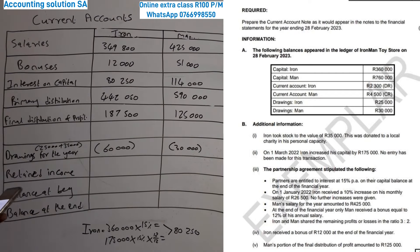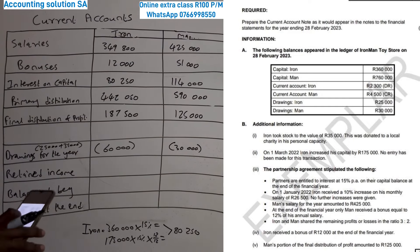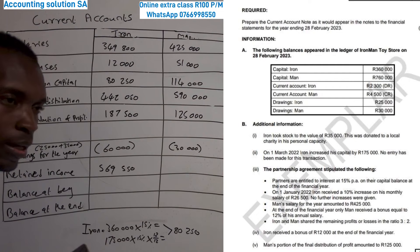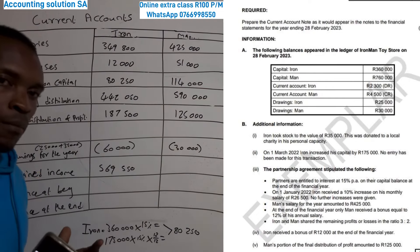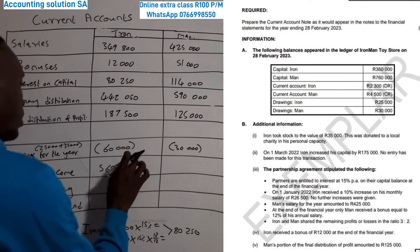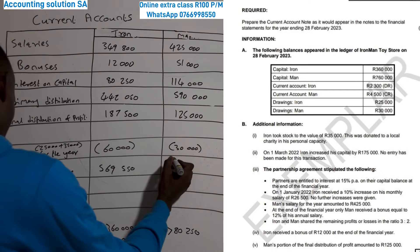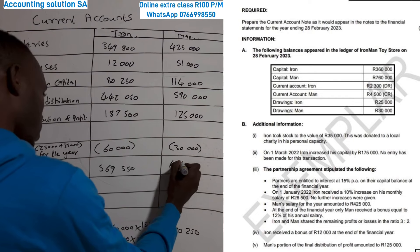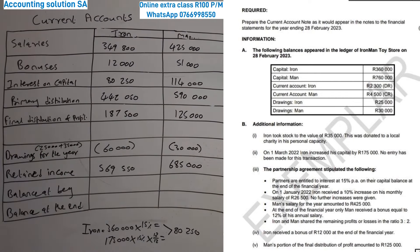Now we calculate the retained income. You take the primary distribution plus the final distribution minus the drawings to get what was retained. For Iron, retained income = 569 550, and for Men it's 685 000. Retained income is what you have left in the business after subtracting drawings. Then we look at the opening balance and closing balance — the opening balances are given in the current account in the ledger.